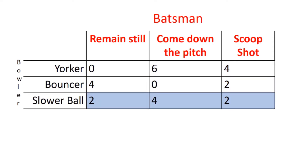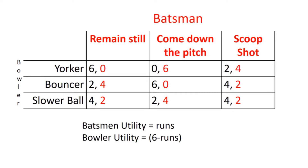When the bowler bowls a slow ball, it's difficult to score effectively regardless; however, coming down the pitch is slightly easier, hence an expected outcome of four. The other options have an expected outcome of two. As the batsman aims to maximise runs scored, we can use runs to indicate utility. The bowler is trying to minimise runs, so we consider the maximum score of six as zero bowler utility, and use the formula six minus runs to calculate its utility, as is shown in this payoff matrix.